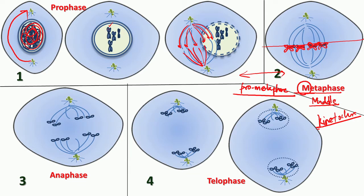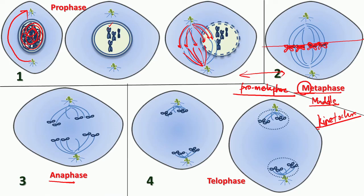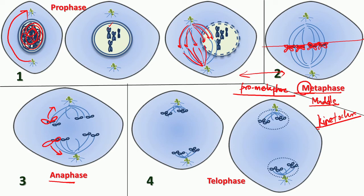Then comes the third step: anaphase. At anaphase, the chromosomes are sitting at the equatorial plane attached to the spindle network, and you start seeing the microtubules of the spindle fibres pulling apart. It is almost like a tug of war happening between the two ends of the spindle, and as a result the sister chromatids start getting separated — one set goes to one end, the other set is pulled to the other end. In anaphase, the actual separation of the sister chromatids which were attached all this while begins.